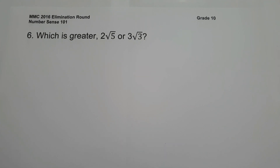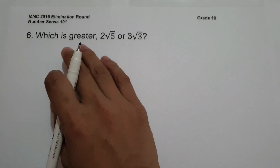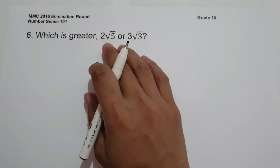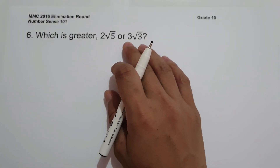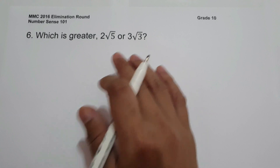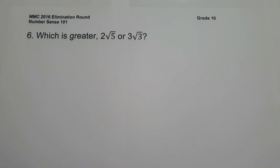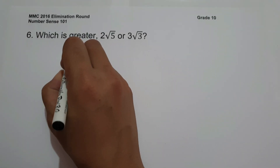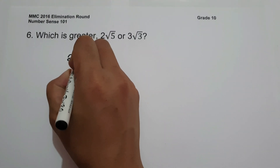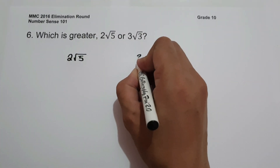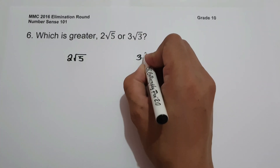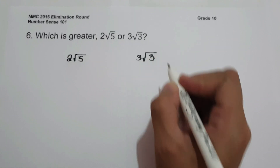To start with number 6: which is greater, 2 square root of 5 or 3 square root of 3? In the MTAP competition, you are not allowed to use a calculator. So how can we identify which of the following numbers is greater? Let us have 2 square root of 5 on one side, and 3 square root of 3 on the other side.